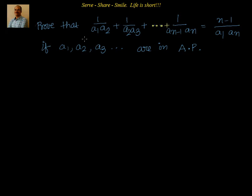So, how to solve this problem? Certainly, we do not want to take LCM. So, we have to look at the solution or RHS, what I have to prove. I have to prove n minus 1 divided by a1 into an. If you observe that, a1 is the beginning, the first term is having a1 and the last term is having an.